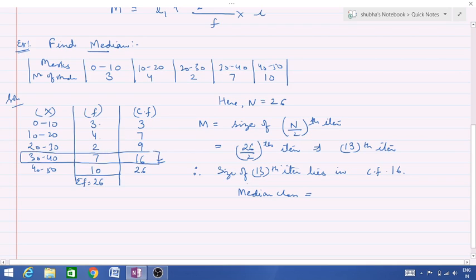Median class is 30 to 40. Now what is L1? The lower value in this median class, that means 30, 30 is L1. Now what is F? Frequency, the one corresponding to it, is 7. CF, cumulative frequency, we always take the one above it, is 9. And i is the size of our class interval of median class, this is 10.